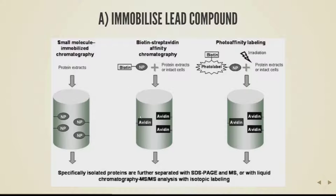We can use more complex but in practice much more convenient techniques such as biotin-streptavidin affinity chromatography. Biotin has a really amazing affinity for the biomolecule avidin — biotin will stick to avidin almost like a covalent bond. If we attach biotin to our natural product and flush it through a column exposing avidin, the avidin binds the biotin and displays the natural product on the solid surface. We then flush protein extracts or intact cells through, our targets bind to the natural product, and we can then release them by denaturing the protein or disrupting the biotin-avidin interaction.